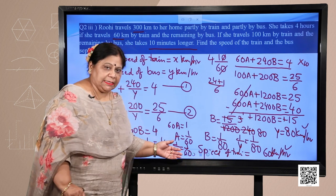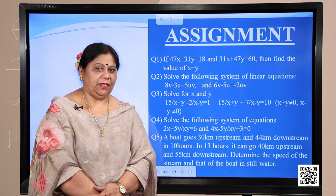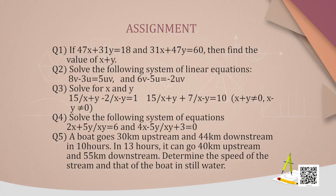I hope it is clear. We have learned how to solve word problems using algebraic methods. Now it is time for an assignment. Question 1: If 47x plus 31y equals 18 and 31x plus 47y equals 60, find the value of x plus y. Hint: these two equations can be added once and subtracted next time to give simplified linear equations.